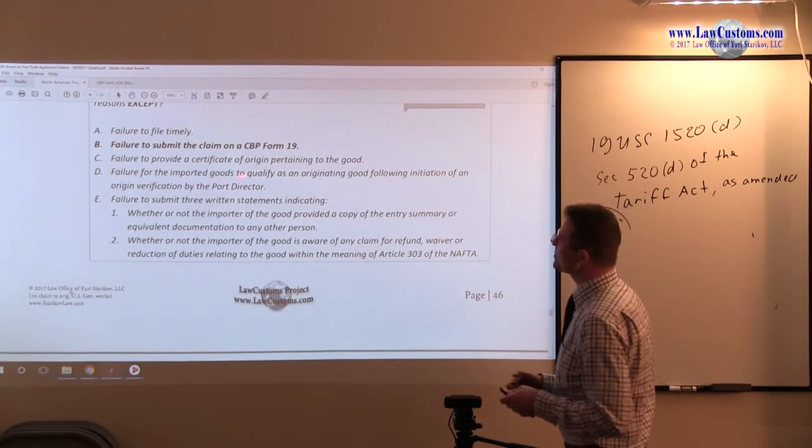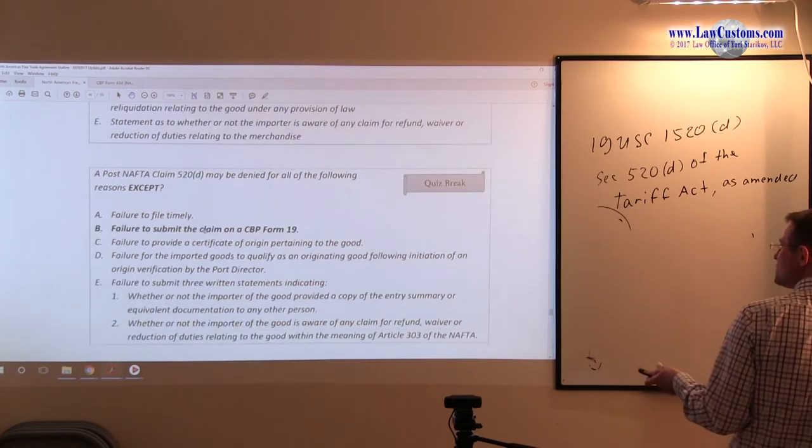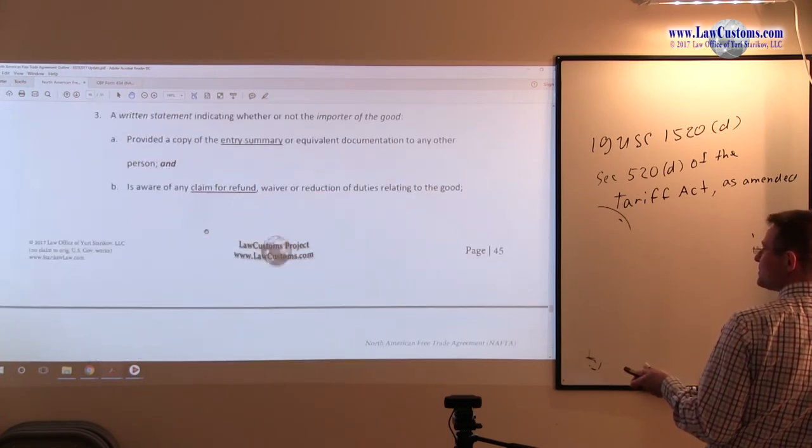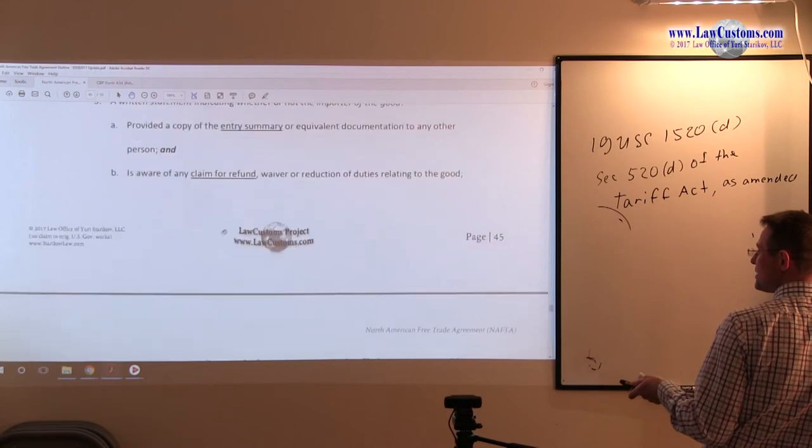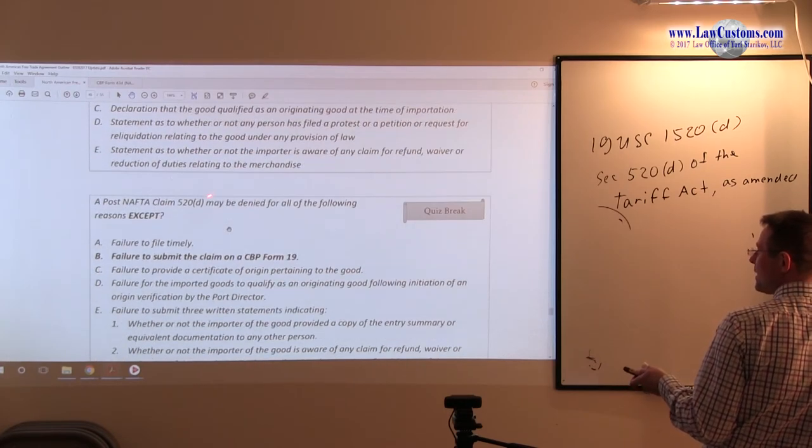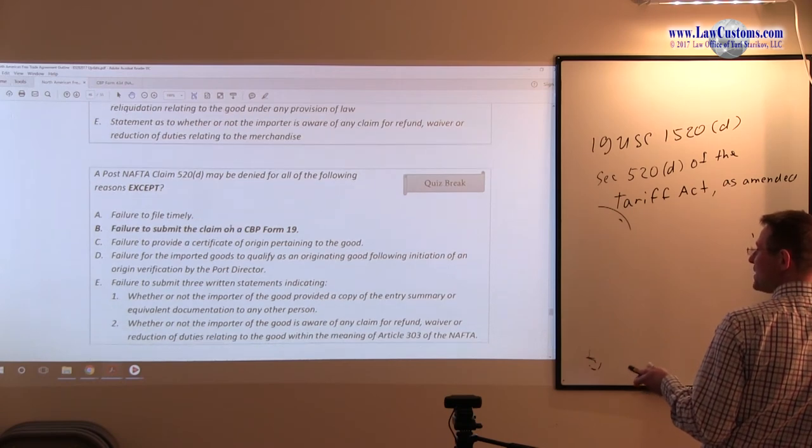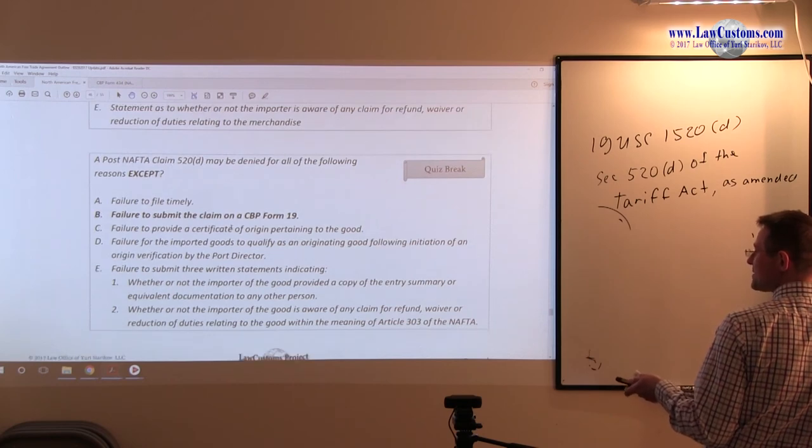Failure to provide certificate of origin. Well, we know that CBP Form 434 certificate of origin is on the laundry list of the requirements. Certificate of origin is a must. So may be denied. It's probably will be denied if you fail to provide it. So C is not our choice.